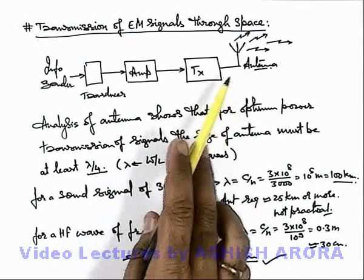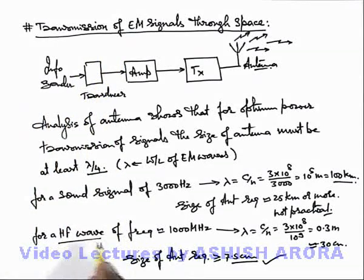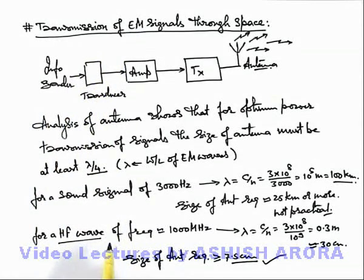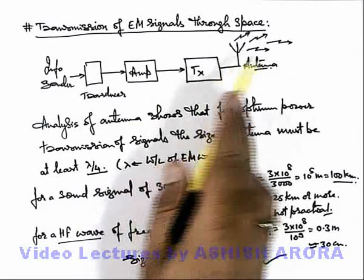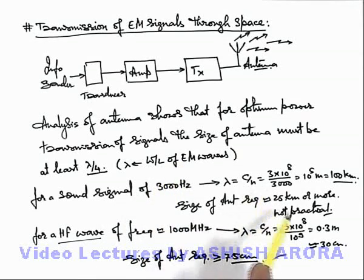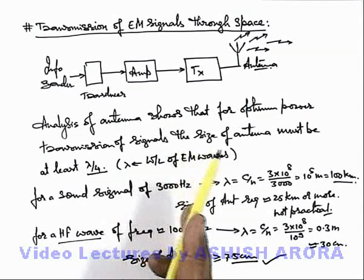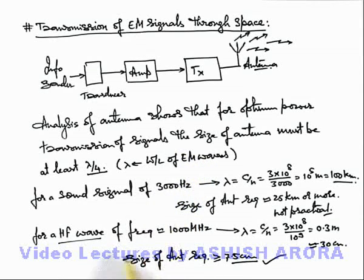So in case of space transmission of electromagnetic waves, we prefer high frequency waves only, where the size of antenna used for broadcasting of signals would be practical. For low frequency waves, the size of antenna would be impractical or not feasible. That's why only high frequency waves are used